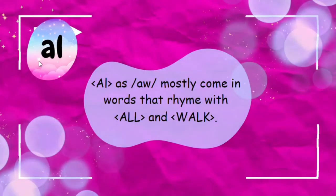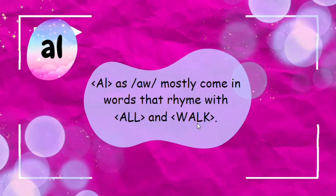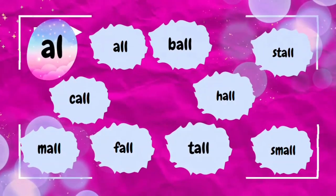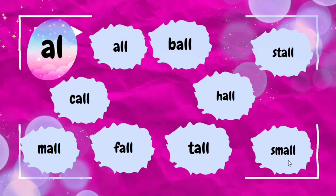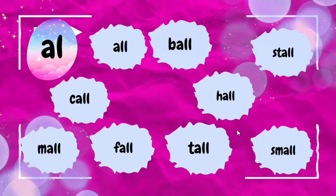Now, AL. AL saying AW mostly comes in words that rhyme with CALL and WALK. For example: CALL, BALL, MALL, FALL, TALL, HALL, STALL, and SMALL. This is a wonderful way to help kids memorize AL saying the AW sound, because these words all rhyme and they are short and common words.